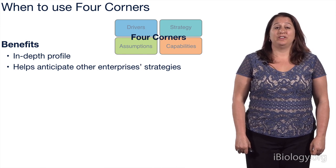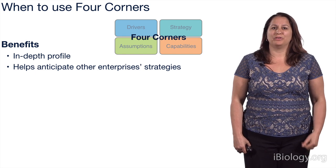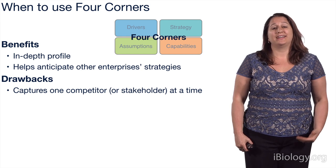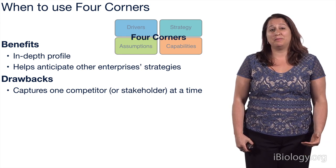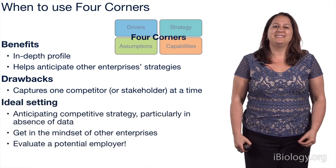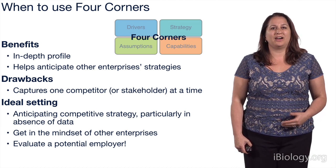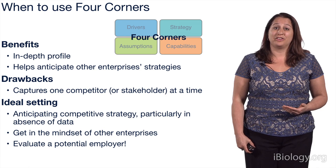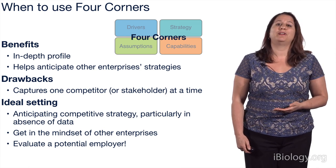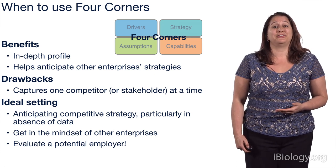The Four Corners is a really useful tool for creating an in-depth profile of a stakeholder and anticipating their strategies. Drawbacks: it is a lot of work and captures only one competitor or stakeholder at a time, so if you're interested in multiple stakeholders you must do the work for each one separately. The ideal setting is anticipating competitive strategy, particularly in the absence of data. As an added bonus, if you're looking for a job, you can use Four Corners to evaluate a potential employer and think through where their strategies are going.